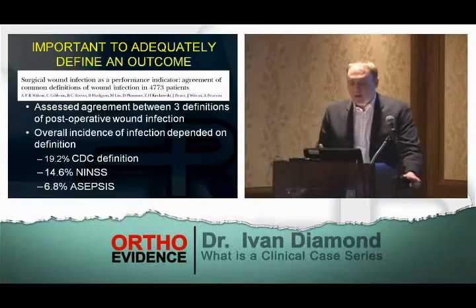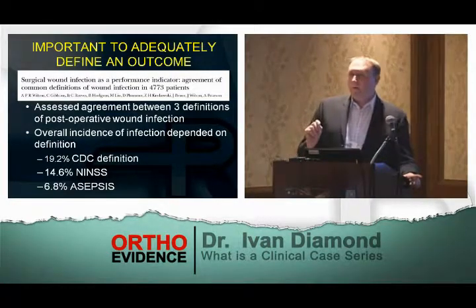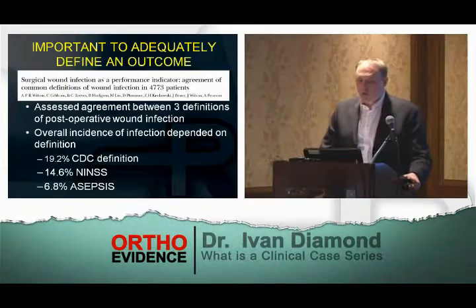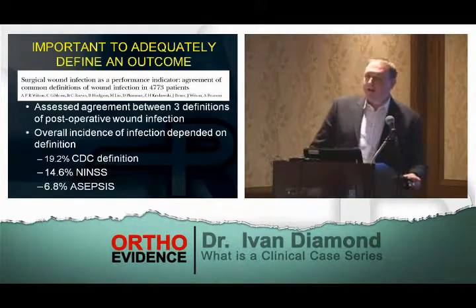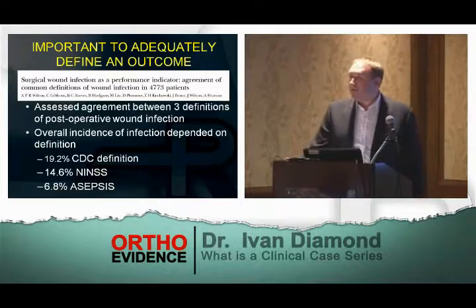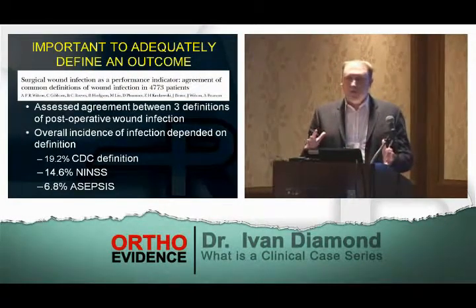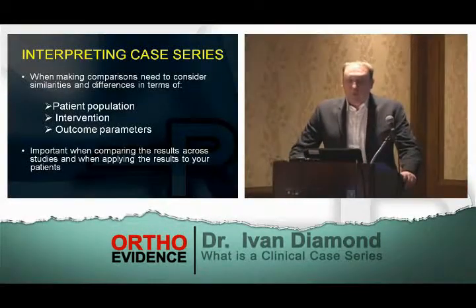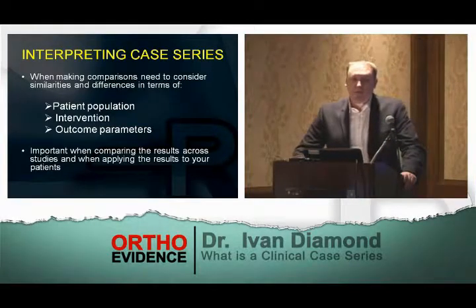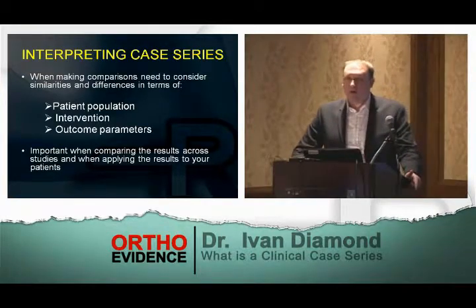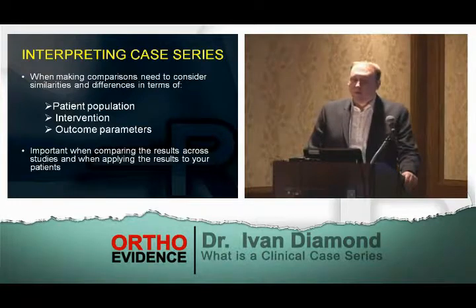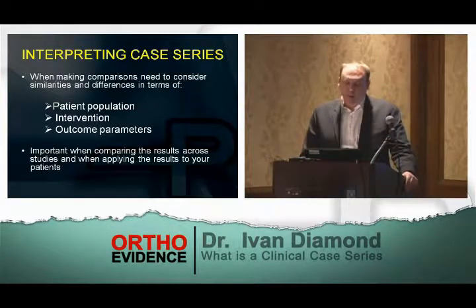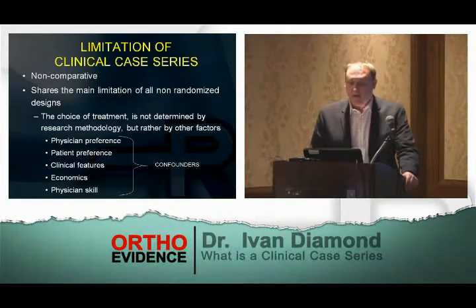A study looked at agreement between three different definitions of surgical site infection — a very common outcome in surgical studies. Depending on how infection was defined, the infection rate ranged from 7% to 20%, even using standardized published measures. When comparing clinical case series, you must consider similarities and differences in population of interest, intervention or exposure, and outcome parameters — both for cross-series comparisons and when assessing the applicability of results to your own patients.